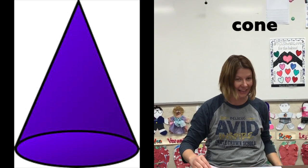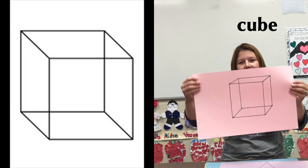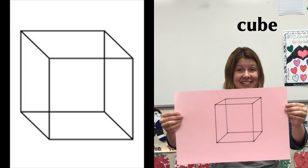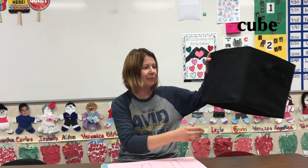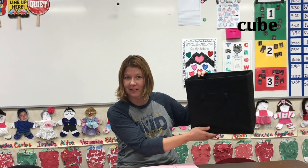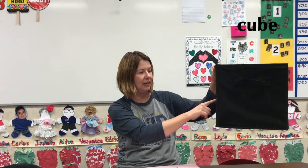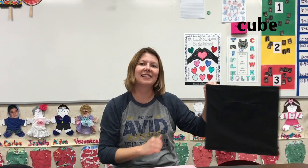And our last shape, friends, is a cube. Let's say cube. Cubes have six sides. Let's take a look at a cube. This is an example of a cube. One, two, three, four, five, six. Six sides.